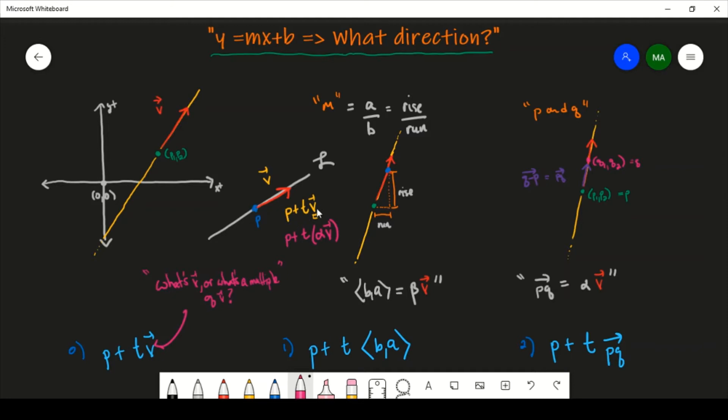So anytime somebody says P plus T V, there's no unique vector that we know definitely corresponds to this line. But there's a unique direction that corresponds to this line, namely right here, any multiple of this thing here.